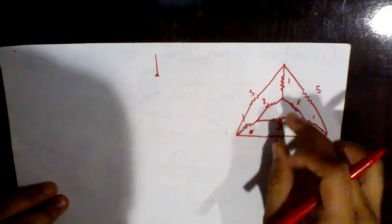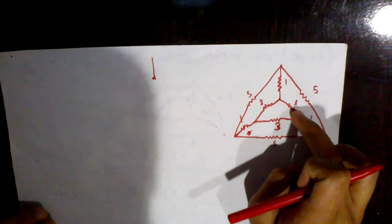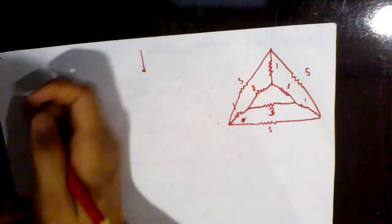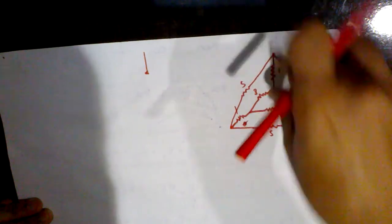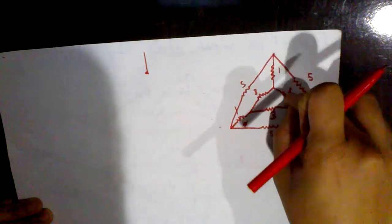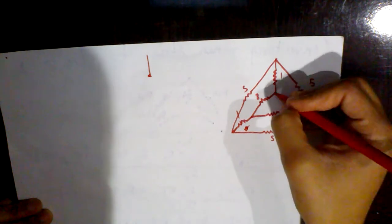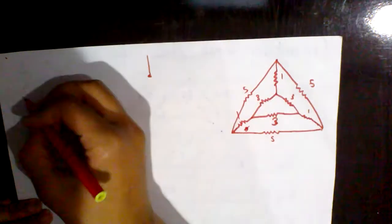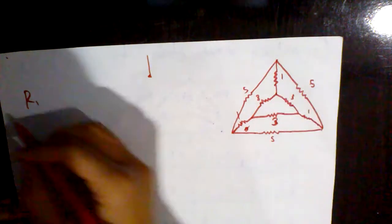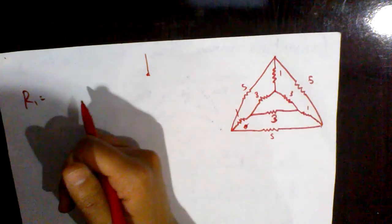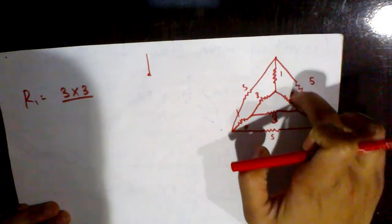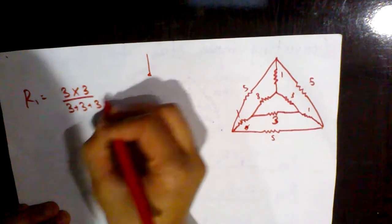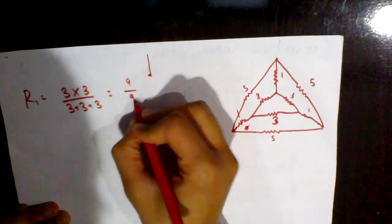We start with this network. To convert it into an equivalent star, as I mentioned in my previous lecture, you take these two resistances, multiply them, and divide by the sum of all three resistances. So if you want to calculate R1, that is R1 = (3 × 3) / (3 + 3 + 3) = 9/9 = 1 ohm.